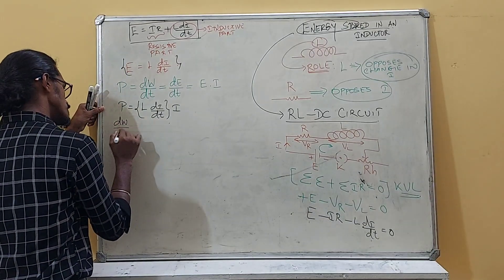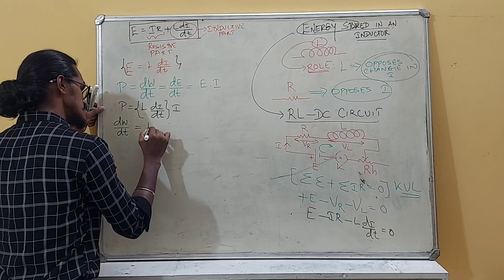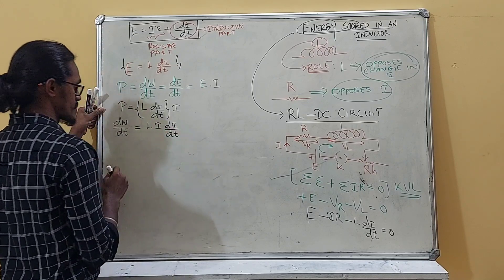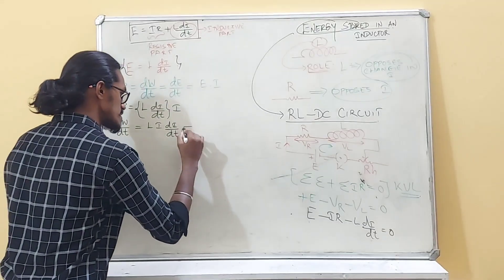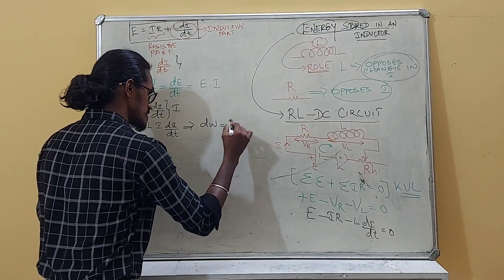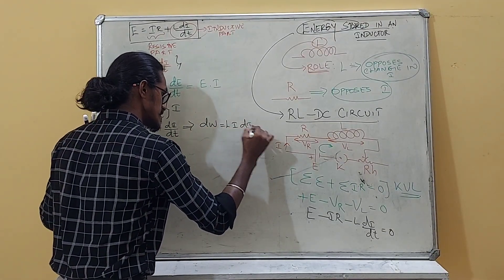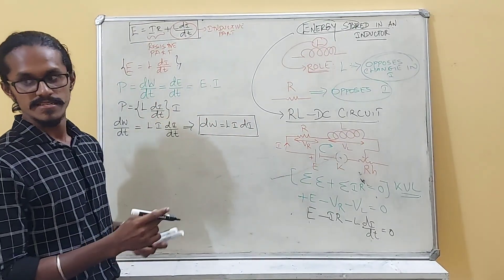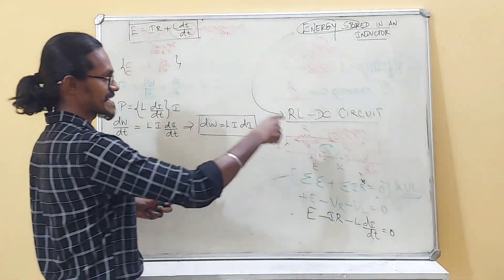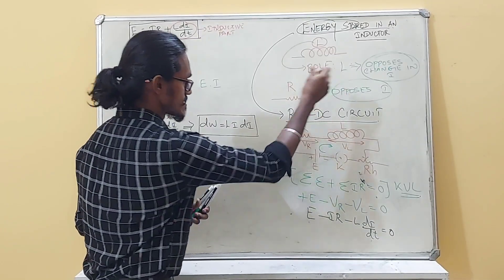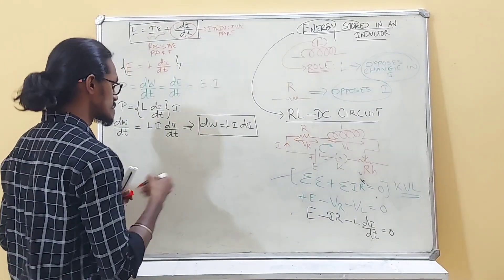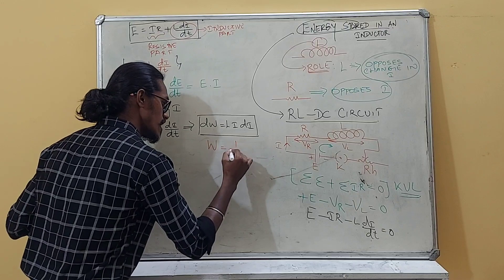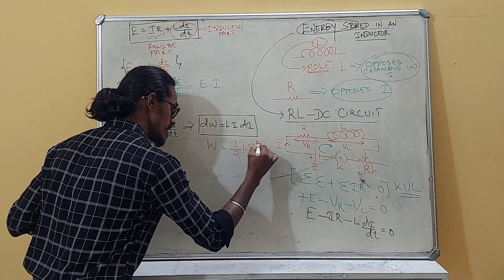Rearranging, dW/dt = L(dI/dt) × I, which implies dW = L·I·dI. Integrating this equation over the limits from 0 to I, we get the total work done: W = ½LI².